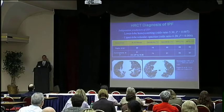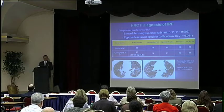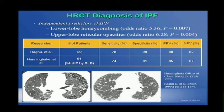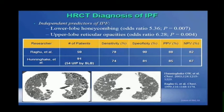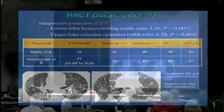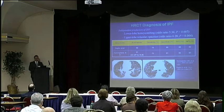What about how useful is high-resolution CT scan for the diagnosis of IPF? There were two studies done, both in Chest. The first one was by Ganesh Ragu, who took 59 patients thought to have IPF and ran them through the usual expert evaluation for interstitial lung disease, including history, physical exam, pulmonary function testing, and high-resolution CT scan. He found sensitivity of 78%, specificity of 90%, positive predictive value 88%, and negative predictive value 82%. So the sensitivity could be better, but the specificity in this approach is pretty good.